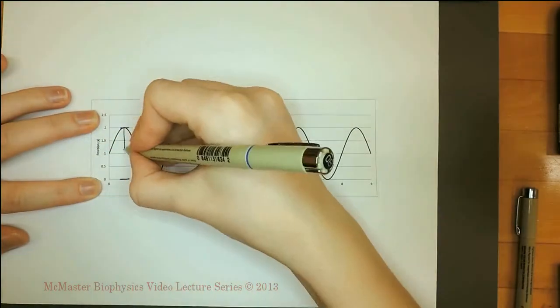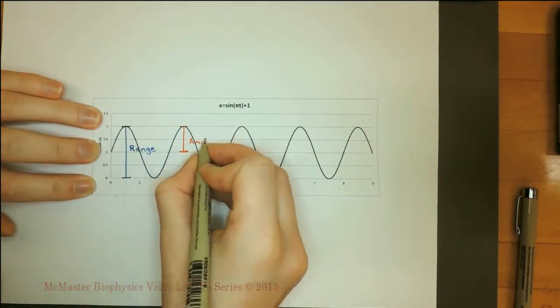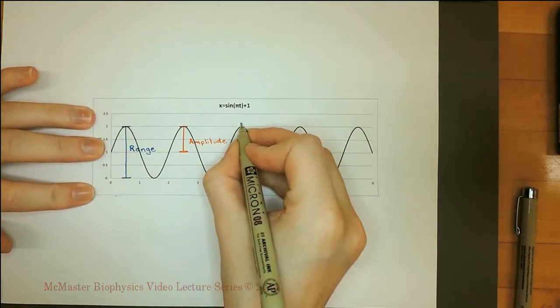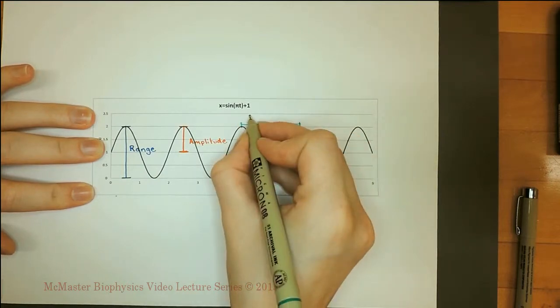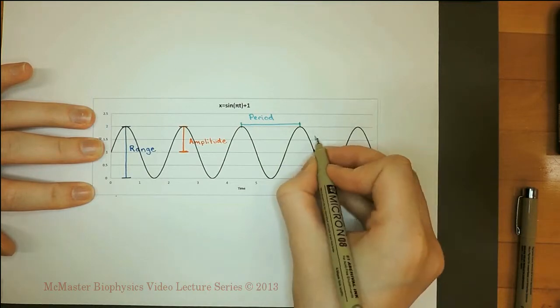Let's examine the graph of the position of a simple harmonic oscillator over time. The amplitude is one half of the range, the distance between the maximum and minimum. The period is the time it takes for one full oscillation. At these points, the object has the same position, velocity, and acceleration.